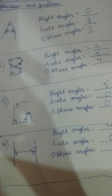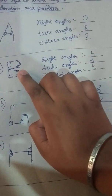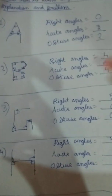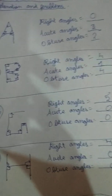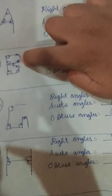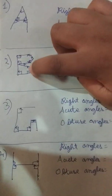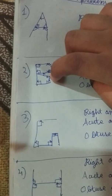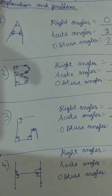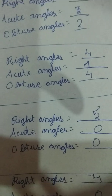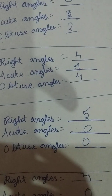And acute angles — only one acute angle is there in this B alphabet. See, all the others are obtuse angles only. And obtuse angles: this is one obtuse angle, and this is another, two, and three, four. So four right angles, one acute angle, and four obtuse angles in letter B.